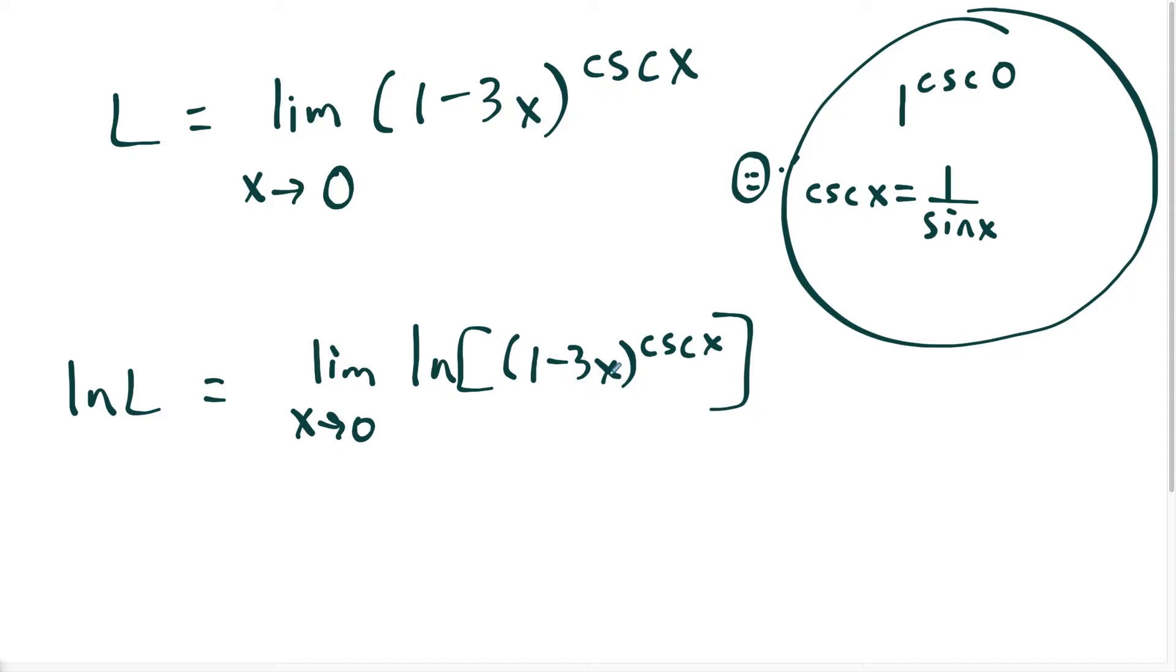And just know here that this process is valid because the base one minus three x, if you think about the graph of one minus three x, it has a y-intercept of one and a slope of negative three, that this graph is positive as long as x is less than a third. So in that immediate neighborhood of zero, I have a positive base. So I'm allowed to take the natural log of something that has a positive base, because if I had a negative base, then this process wouldn't work.